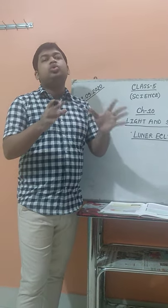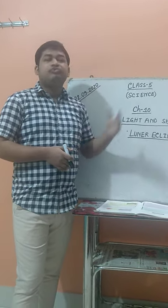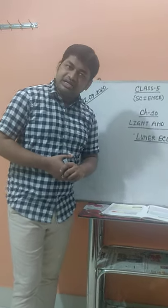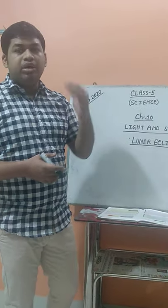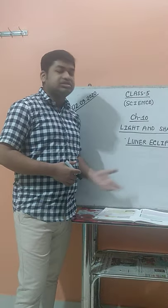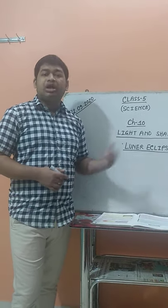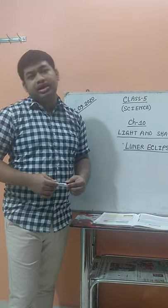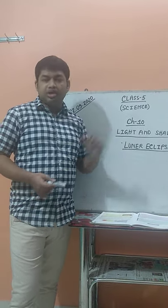The eclipse is of two types. What are the two types? First is the solar eclipse and second is the lunar eclipse. In my previous class I already discussed about the solar eclipse. Today I will discuss about the lunar eclipse.